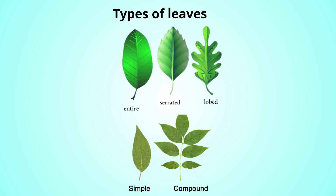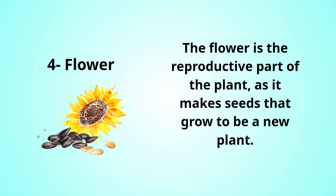This is all about leaves. Now, the last part of the plant is the flower. The flower is the reproductive part — meaning it makes seeds, and the seed will grow to be a new plant. Like this sunflower, it gives seeds to grow again.